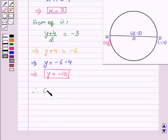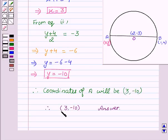Therefore, coordinates of A will be (3, -10). Therefore, (3, -10) are the coordinates of the point A. So hope you understood the solution and enjoyed the session. Goodbye and take care.